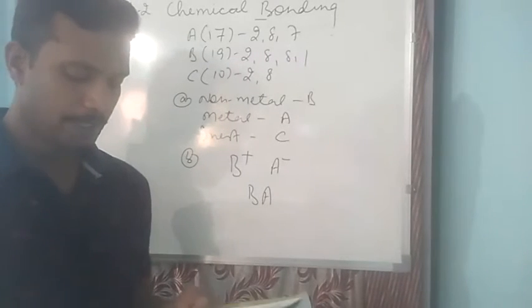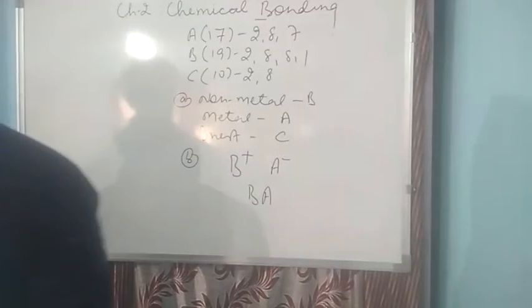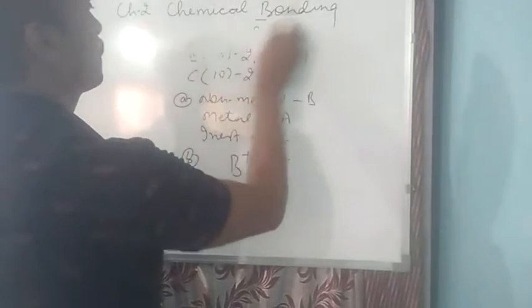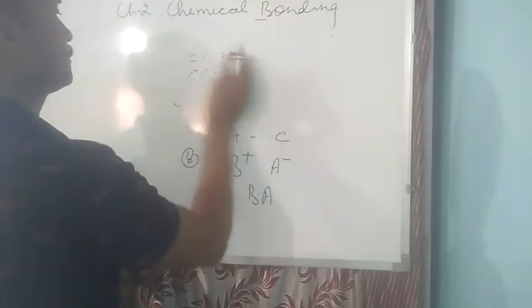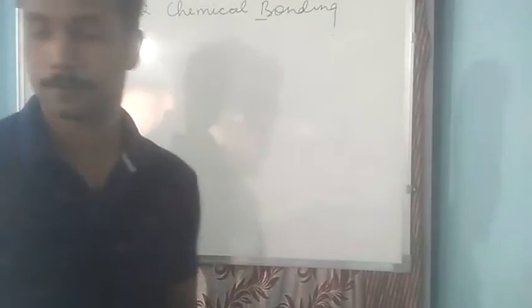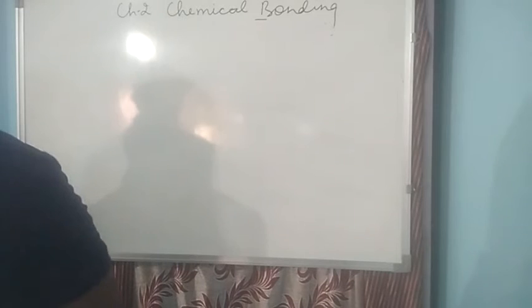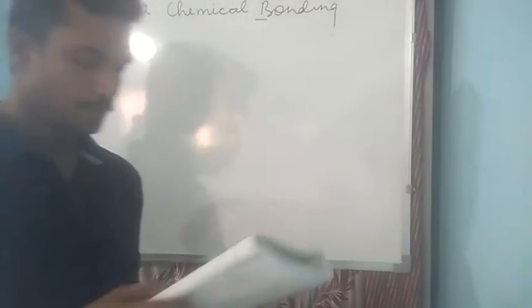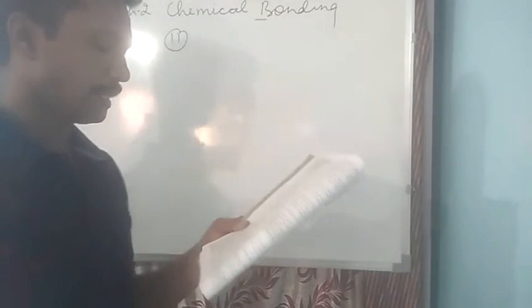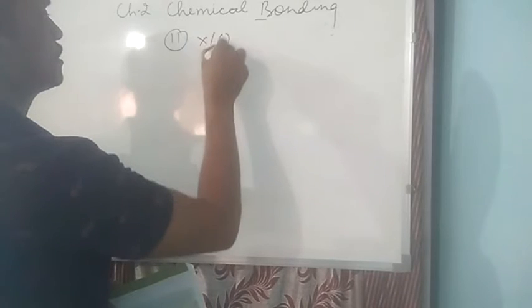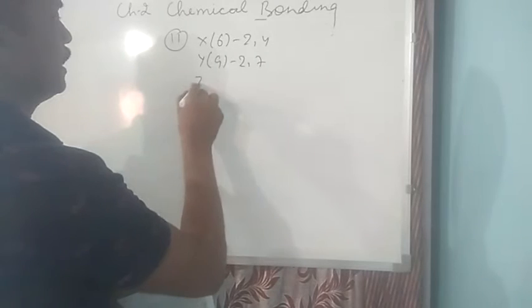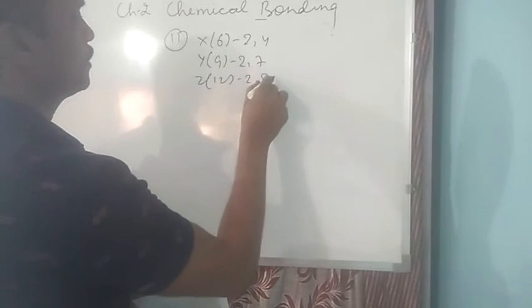We have question number 11. Let us see how to do this. Question number 11: elements X, Y, Z have atomic numbers 6, 9 and 12. X is 6, electronic configuration 2,4. Y is 9, 2,7. And Z is 12, 2,8,2.